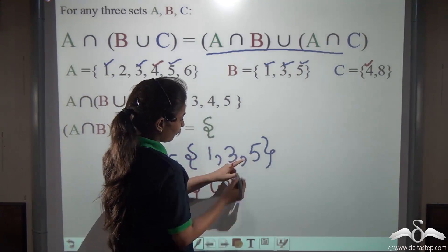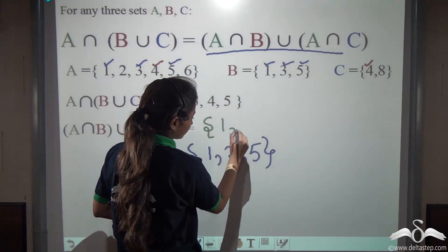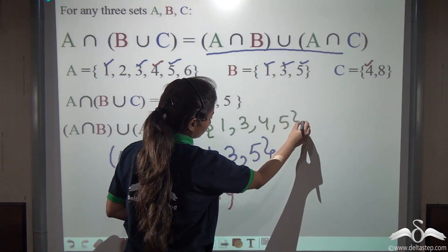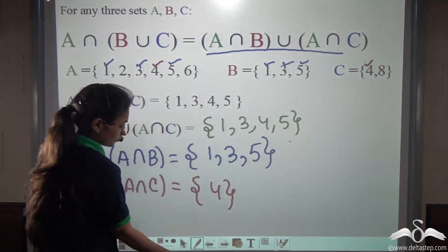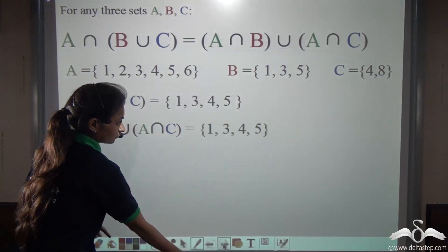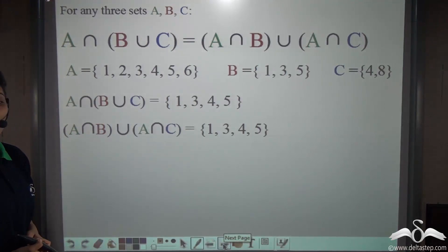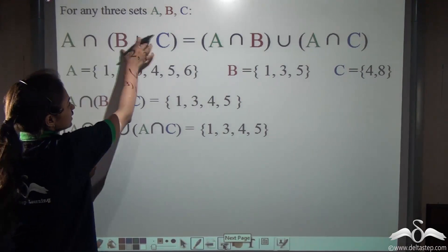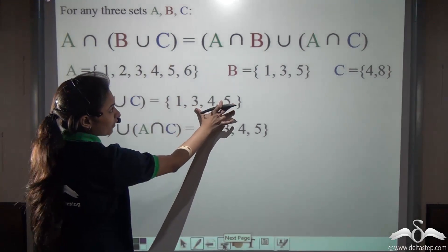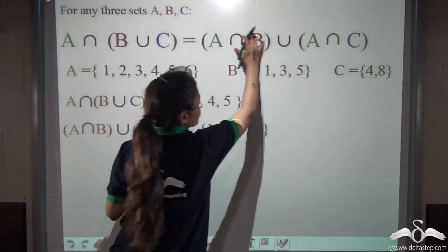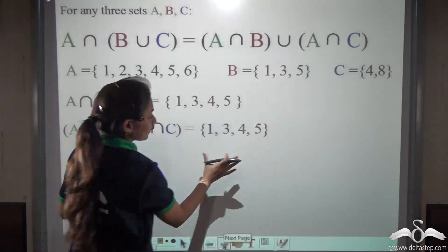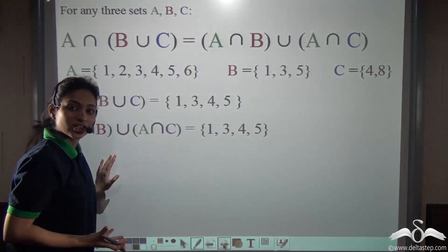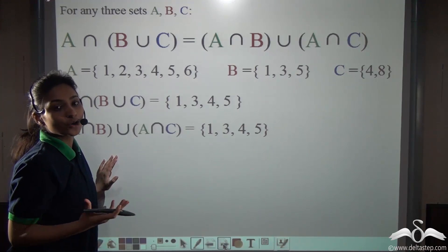Now find out the union of these two sets: {1, 3, 5} union {4} gives us 1, 3, 4, 5. We can see that the left side gives us 1, 3, 4 and 5, and this side also gives us 1, 3, 4 and 5. So again this relationship holds true.